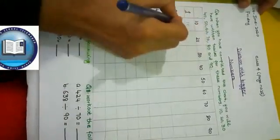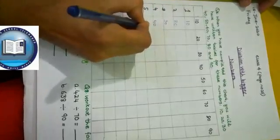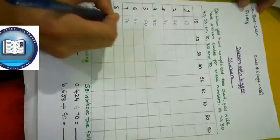10 times 1 is 10, 10 times 2 is 20, 10 times 3 is 30, then 40, 50, 60, 70, 80.